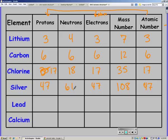For silver, you should have had 47, 61, 47, 108, and 47. For lead, you should have 82, 125, 82, 207, 82. And finally, for calcium, you should have 20 protons, neutrons, and electrons, a mass number of 40, an atomic number of 20.